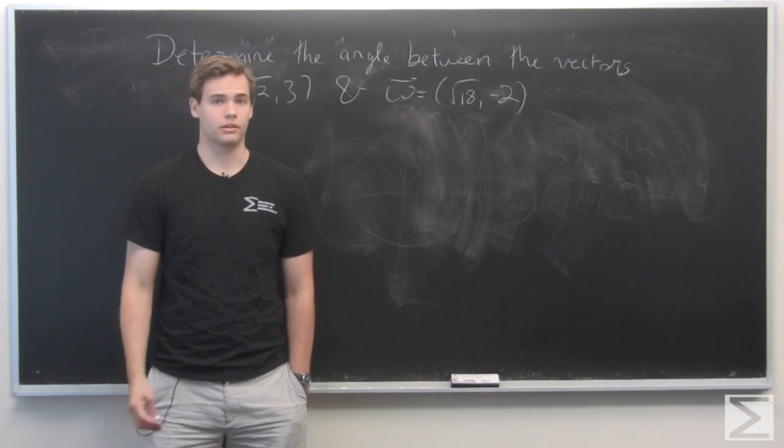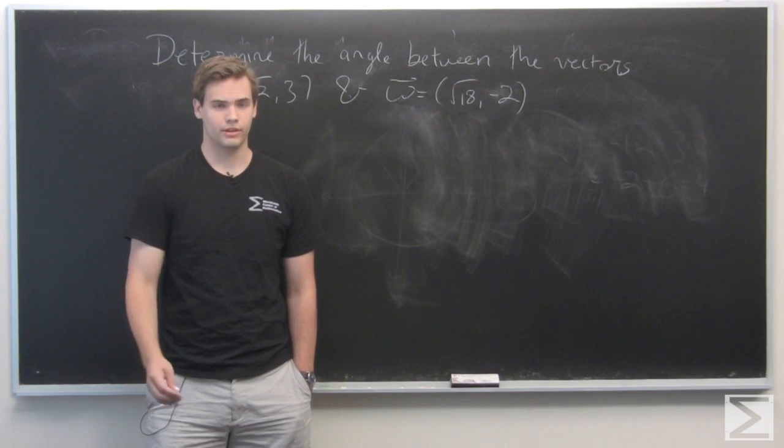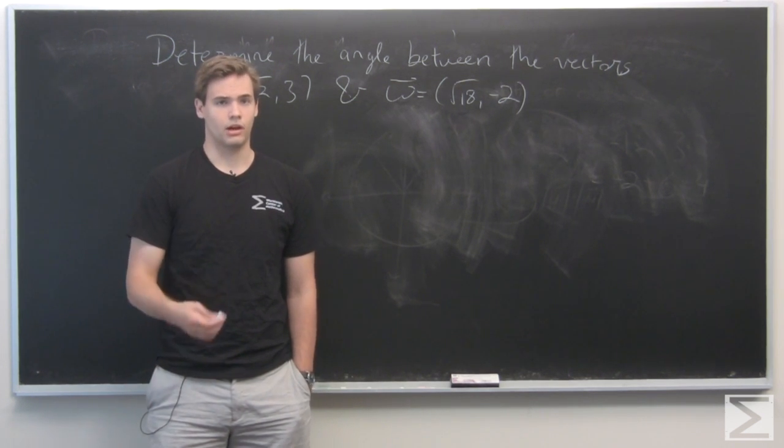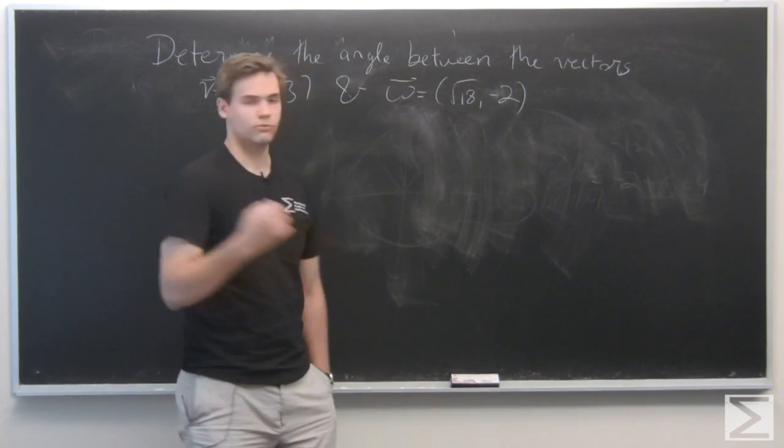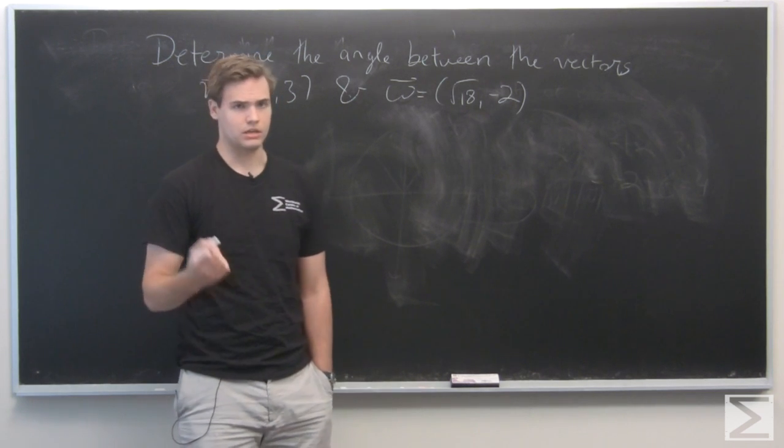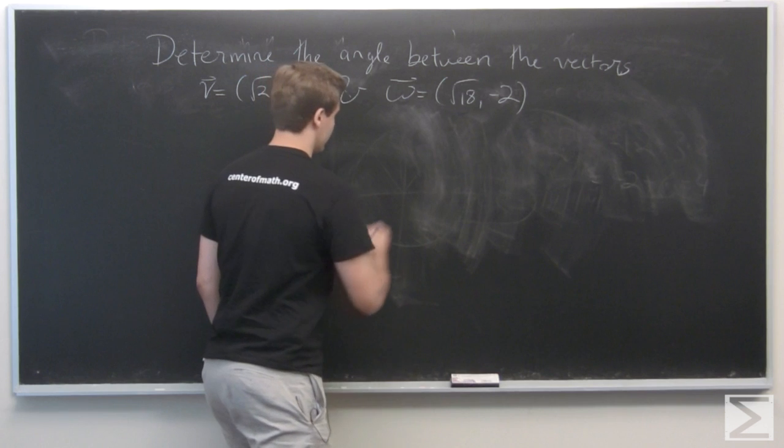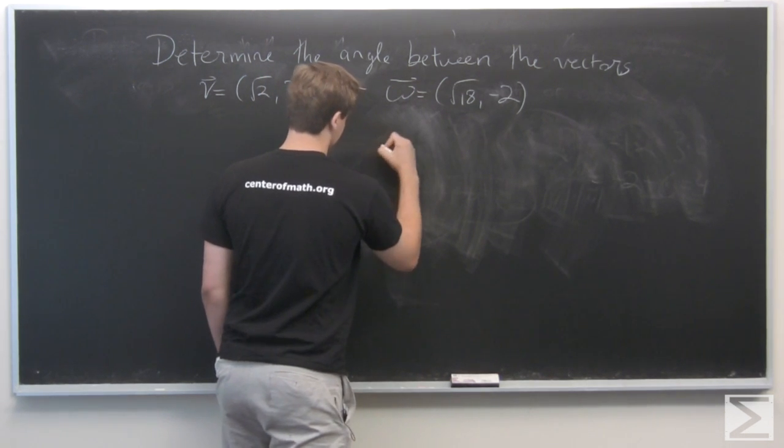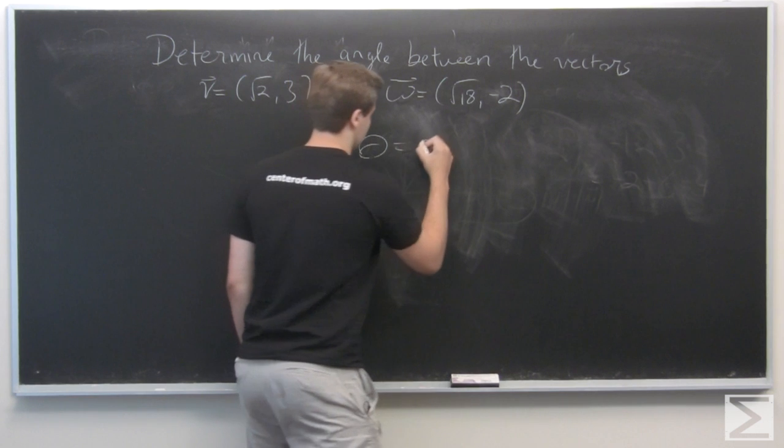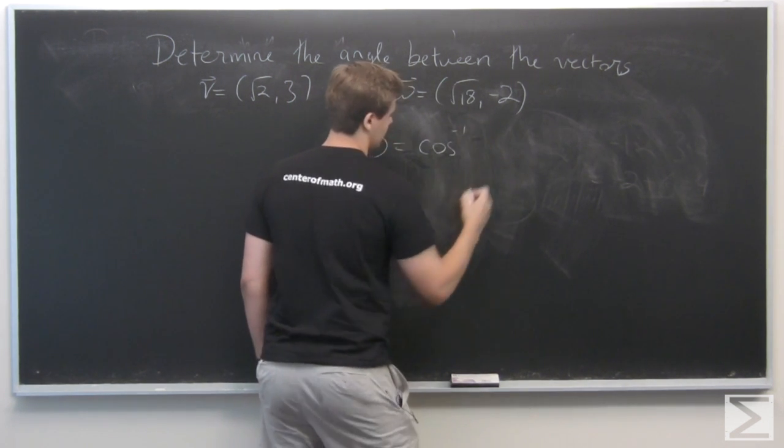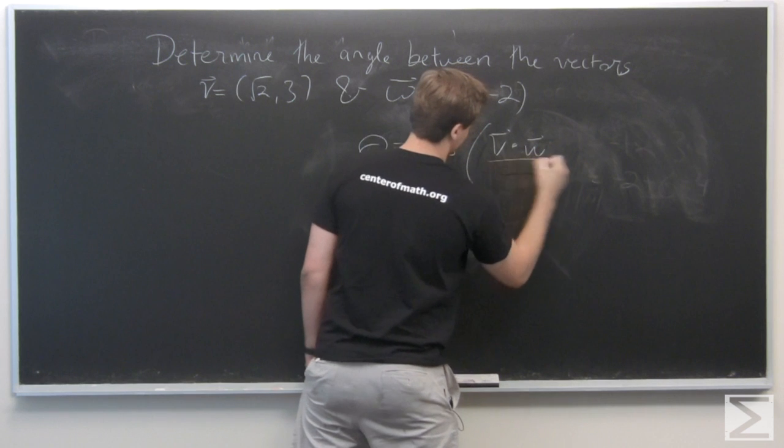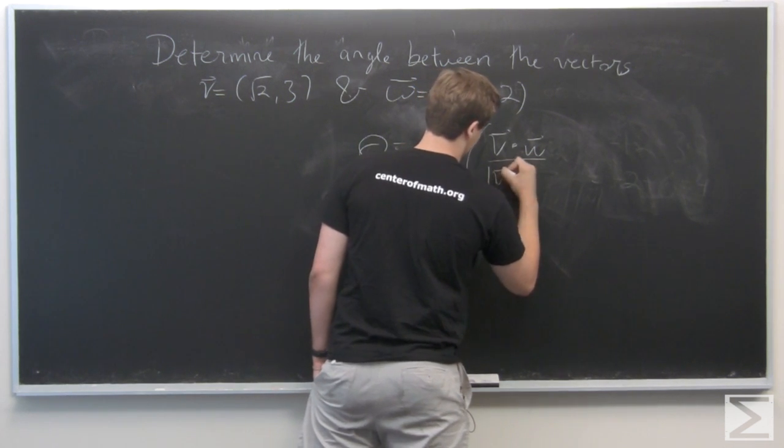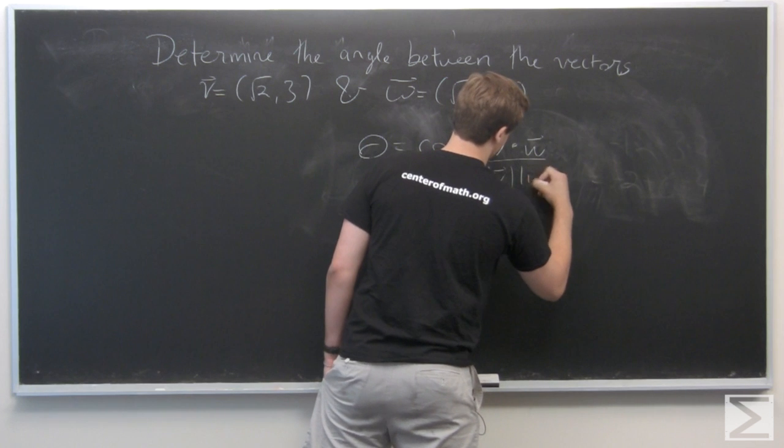So in this section, we've defined the dot product of two vectors. And with that, we've been able to define what the angle is between two vectors. So, for example, if the two vectors are v and w, we define that the angle between them, say theta, is the inverse cosine of v dot w over the norm of v times the norm of w.